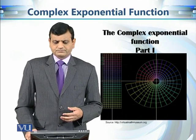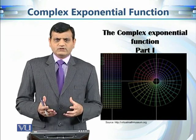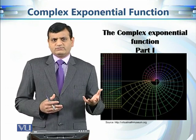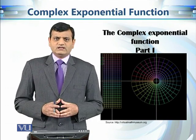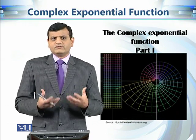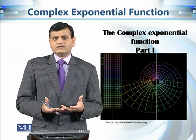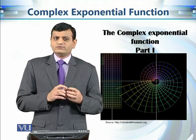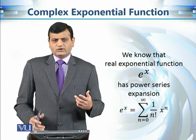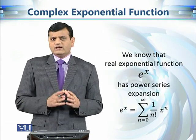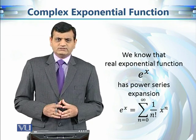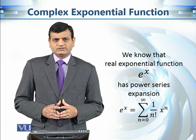In this part we focus on the complex exponential function. The real exponential function e^x, where e ≈ 2.7183 is an irrational constant, is one of the most basic and important functions in real analysis. To construct its complex version, we write down its series expansion, which we can see on the screen: e^x = Σ (1/n!) xⁿ, n from 0 to infinity.